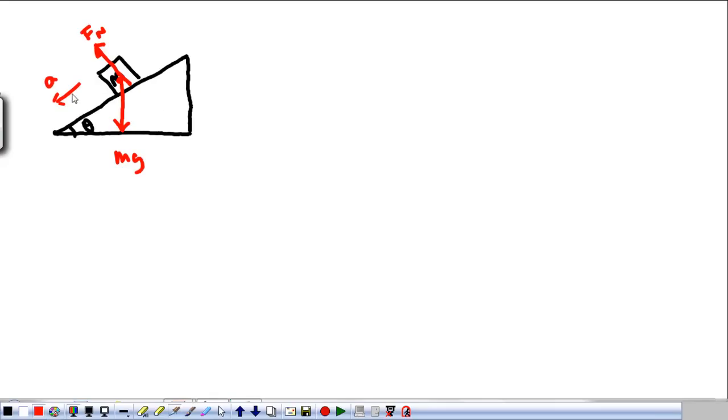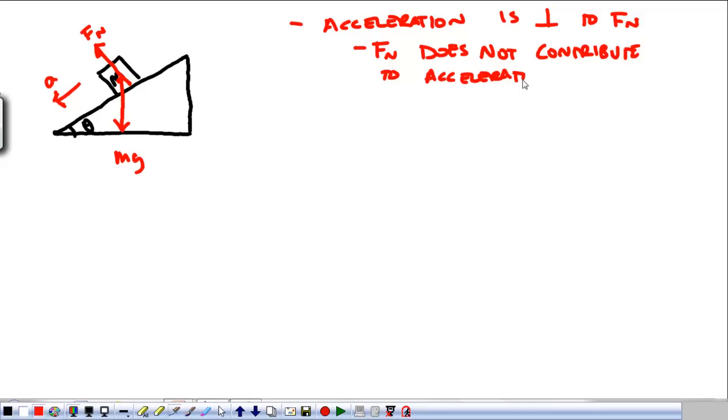Now, when we look at this, the acceleration is perpendicular to the normal force in this case. We can go ahead and write that down. What this means is that the normal force does not contribute to the acceleration. It's a really nice thing. Any time something is at 90 degrees to an acceleration, that force doesn't do anything to it.